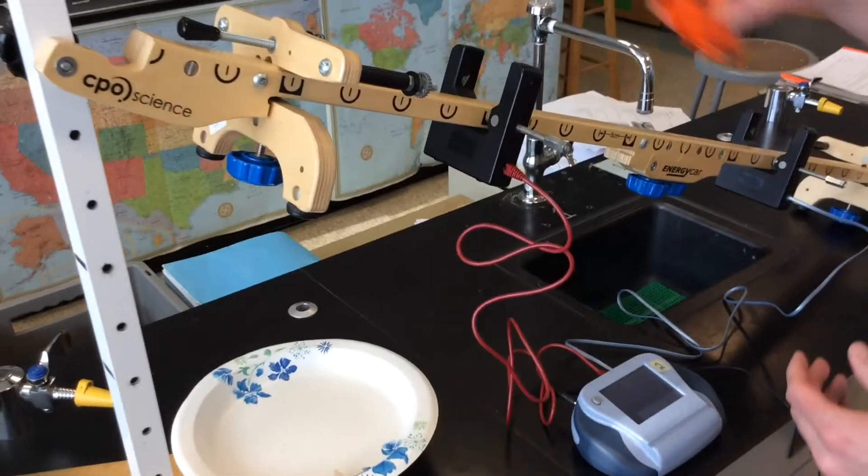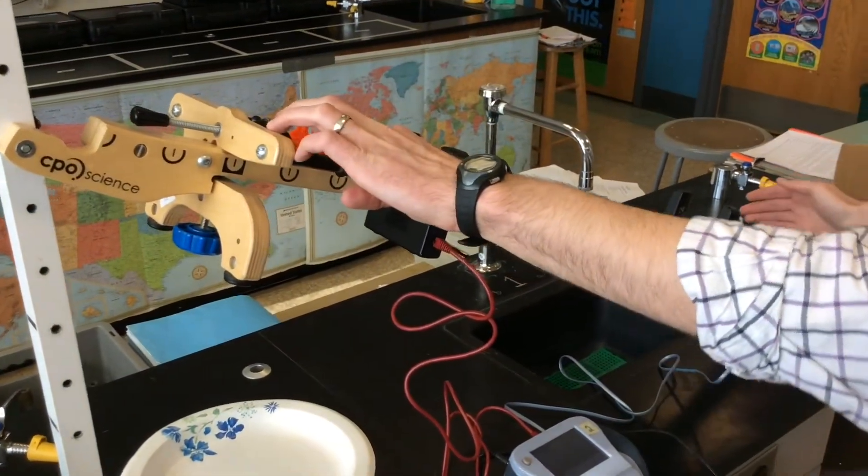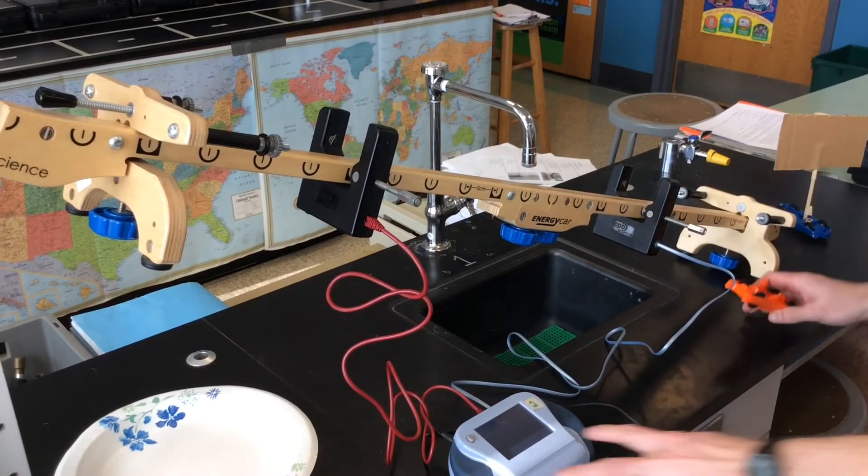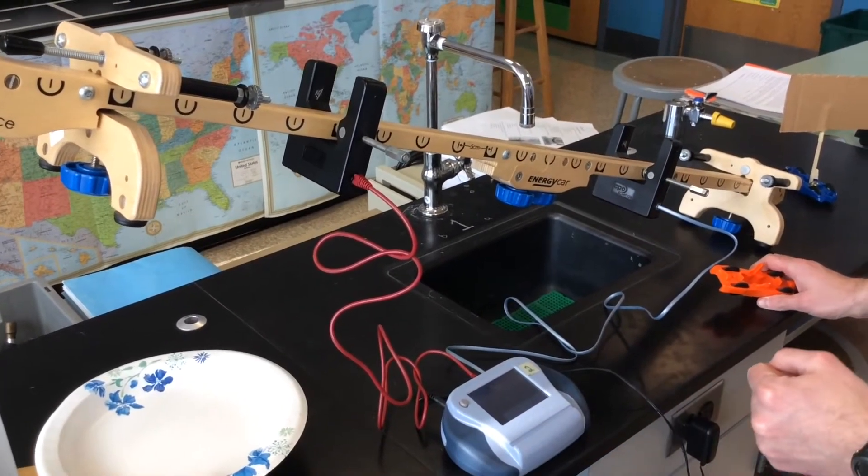So for the control, you're simply putting the car at the top of the ramp, letting it go down, and recording the A-B time. And those are going to be your controls.